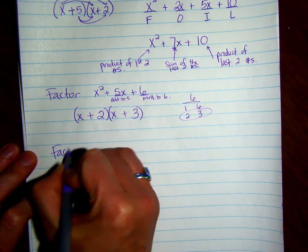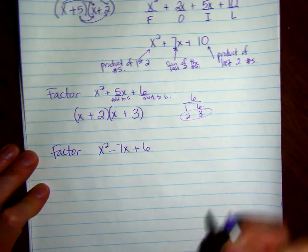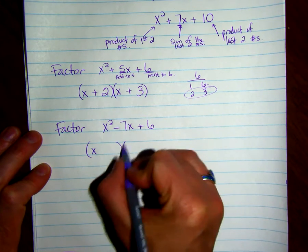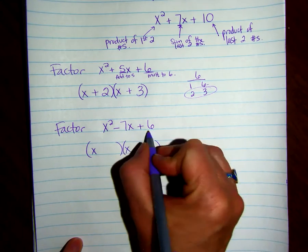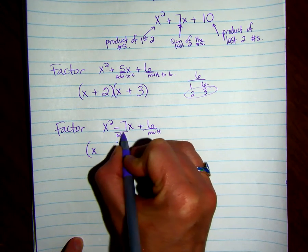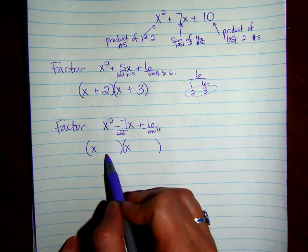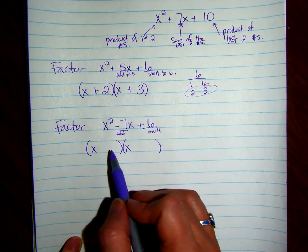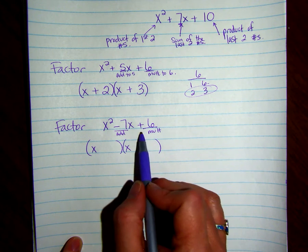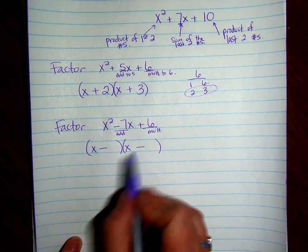We're going to do another one. Factor x squared minus 7x plus 6. So our first terms are going to be x. Notice that we're going to multiply to 6 and add to negative 7. So if we are multiplying to 6 and adding to a negative number, they're probably both going to be negative. Because when you multiply two negatives, you're going to get a positive. So I know I'm going to have negatives here.